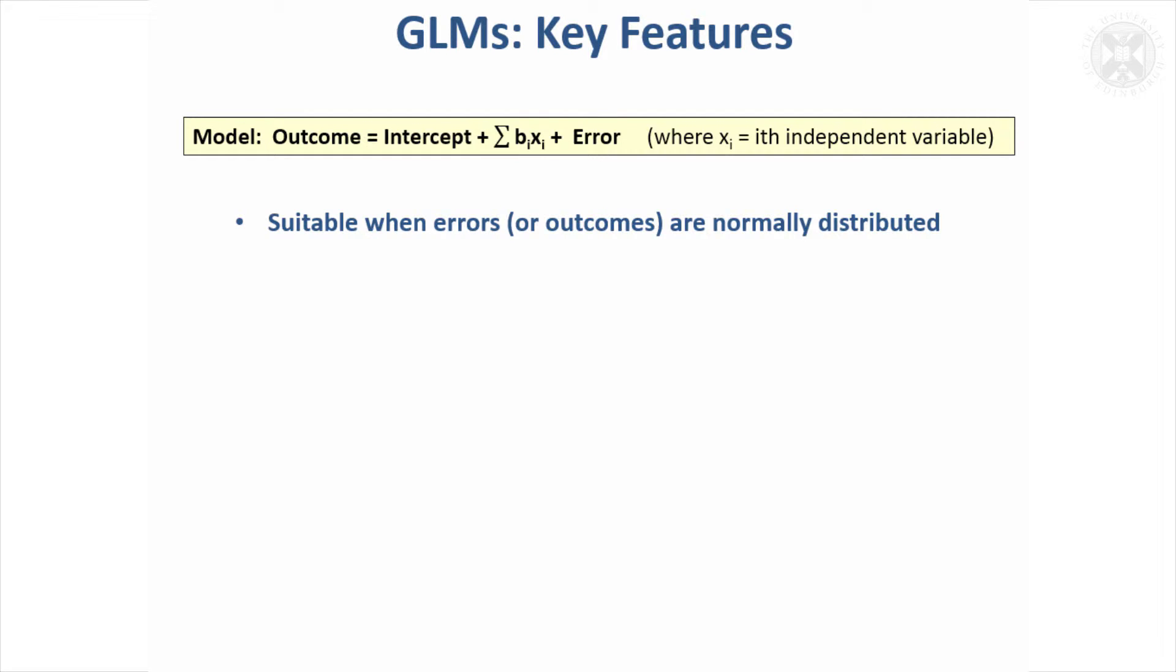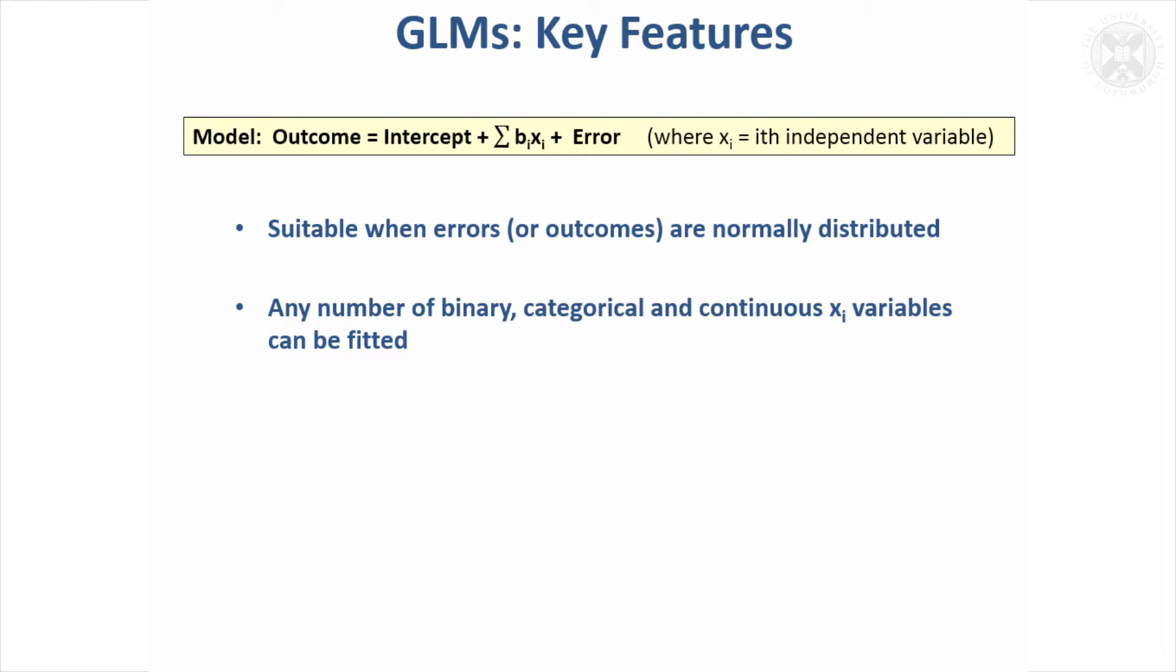The key features of general linear models: I mentioned last time that you assume the errors are normally distributed when you do an analysis of variance and also regression. The same is the case for general linear models. If the outcomes themselves are normally distributed you'll be okay, but the assumption is actually that the errors are normally distributed, and they're the things that ideally should be checked.